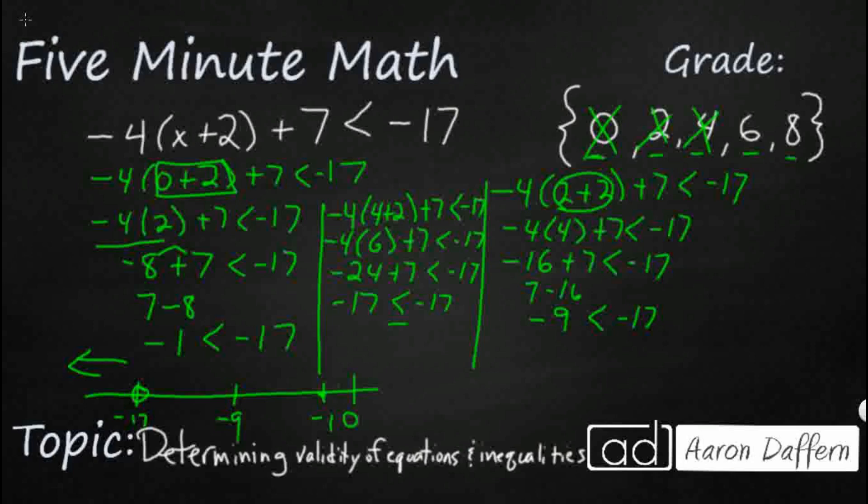Which means I have a feeling 6 and 8 are going to work. Because you notice I've gotten more and more to the left. Let's check my 6. So that's going to be negative 4. And that's going to be 6 plus 2 plus 7 is less than negative 17. So that 6 plus 2 is going to be 8. And that's why we're just doing this one chunk at a time. You start combining steps, things get missed because you get a little bit sloppy. So negative 4 times 8 is negative 32. Oh, that's going to work.